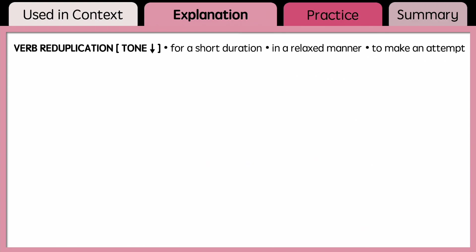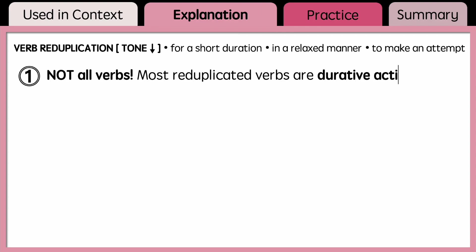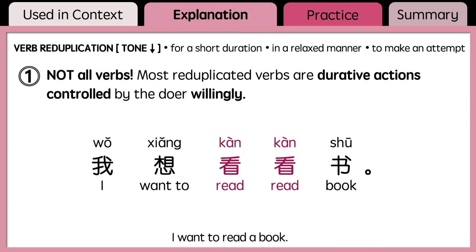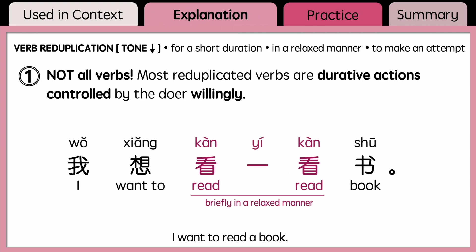In terms of verb reduplication, there are three general points to be aware of. First, not all verbs can be reduplicated. Most reduplicated verbs are durative actions controlled by the doer willingly. Durative actions take place over a period of time, while instantaneous actions take place at a point in time. 看看 or 看一看 indicates that the action is done briefly in a relaxed manner — it weakens the meaning and softens the tone.